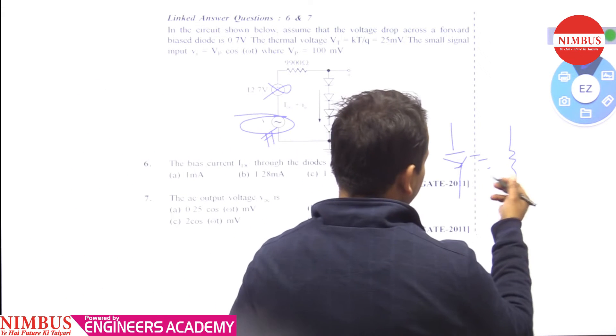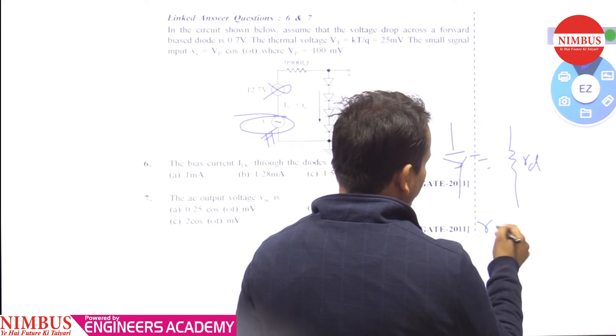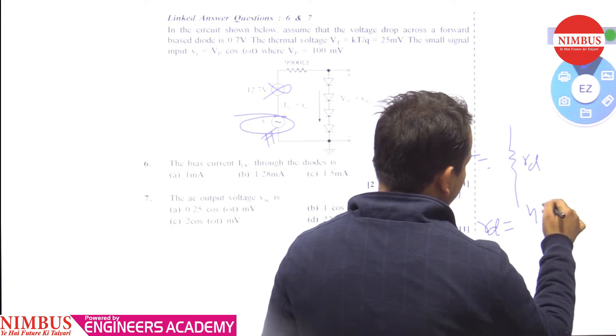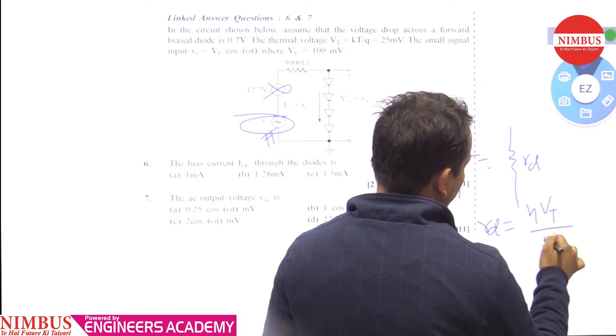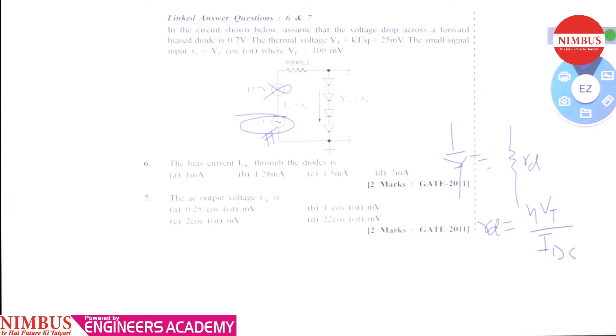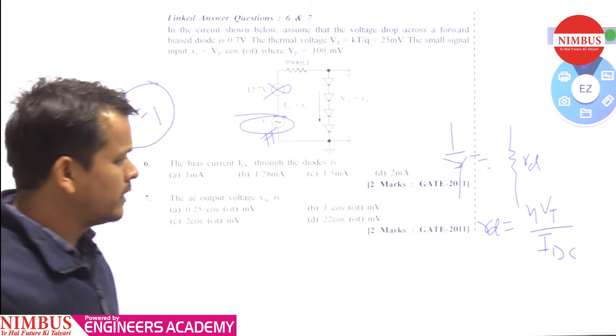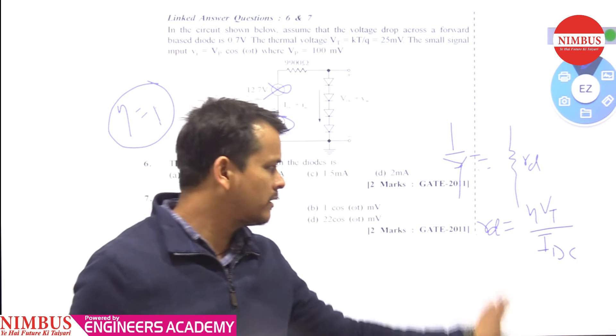What is the small signal model of a diode? It's a resistance Rd. Rd equals η·Vt divided by IDC. Since η is not given, we assume η equals 1. Knowing Vt and IDC, we can determine Rd.